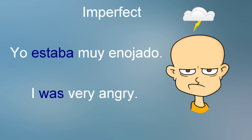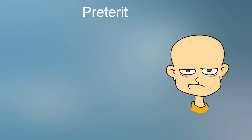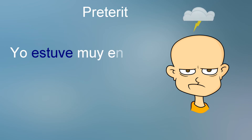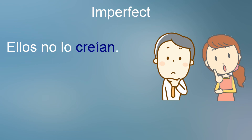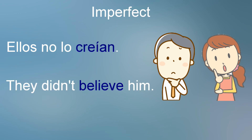The idea here is that your anger — a mental activity — was a state of being not tied to any specific moment, or at least that moment wasn't specified. However, it would be possible to change the expression: 'I got very angry.' Notice how it now seems to point to a specific moment — the English translation even changes the verb from 'was' to 'got.' They didn't believe him — once again, a non-specific thought without reference to a specific action — use imperfect.